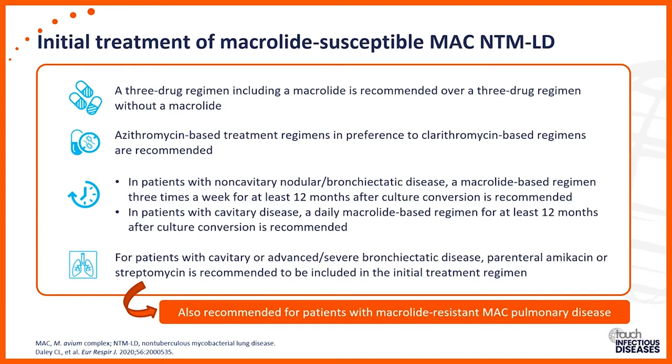The standard regimen is a macrolide — azithromycin is preferred and recommended in the guideline — along with ethambutol and a rifamycin, with rifampin being the preferred rifamycin. In patients with severe or initial cavitary disease or very advanced severe bronchiectasis, we add IV amikacin or streptomycin at the beginning of initial treatment, usually for several months.